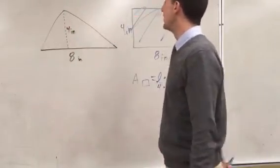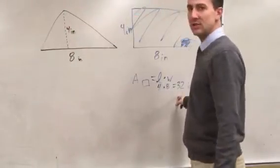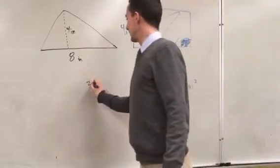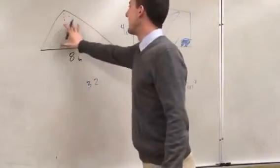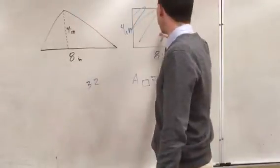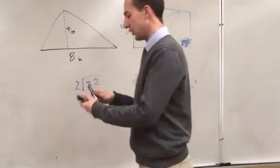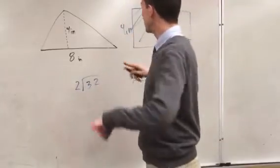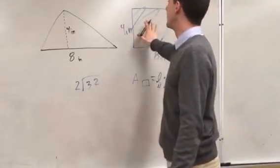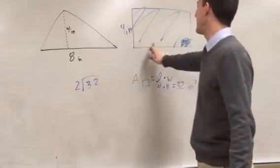This area is half of what this area is, so we simply divide by 2. So we found the area of a rectangle with the same height and the same base.